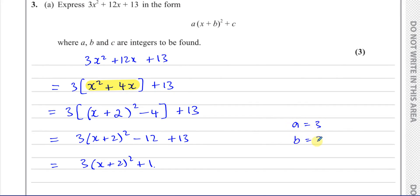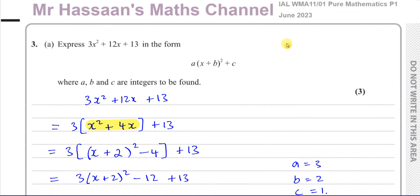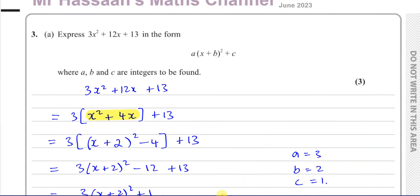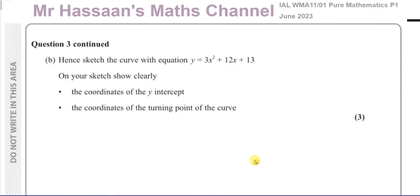Now we're going to go on to part b. Now for part b, it says hence. Hence, very important word. Sketch the curve with equation y = 3x² + 12x + 13. On your sketch, show clearly the coordinates of the y-intercept and the coordinates of the turning point of the curve. Okay, so when it says hence, it means using what we just did.